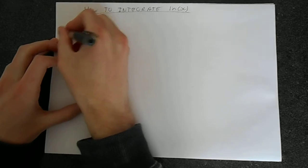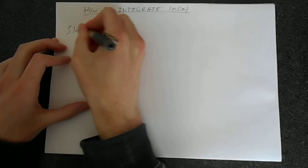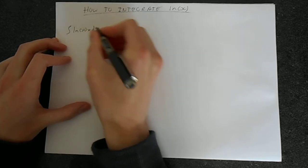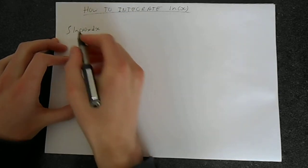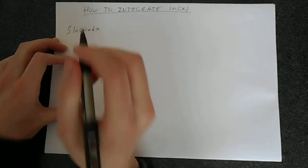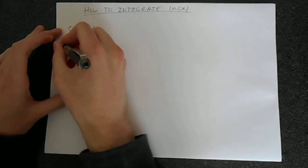So, we've got the integral of ln of x dx, and we can think about this as ln x times dx. We've got one thing times another thing, so we can use integration by parts, and this is the trick.